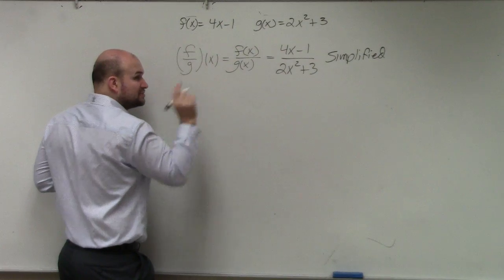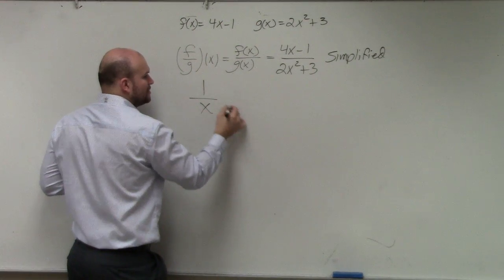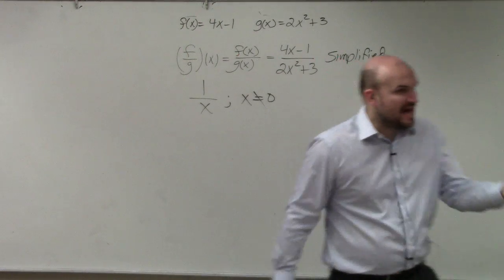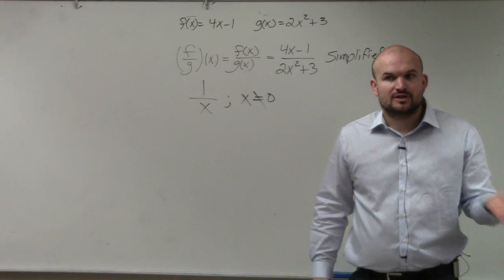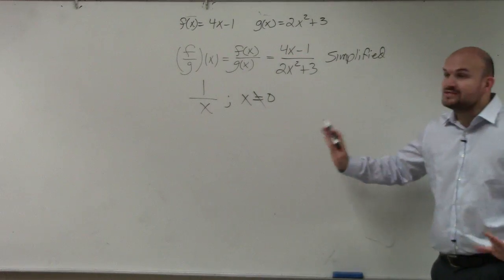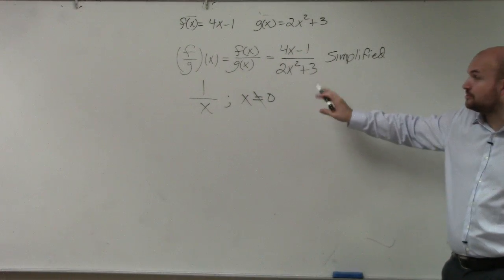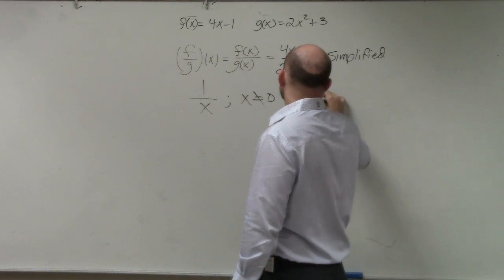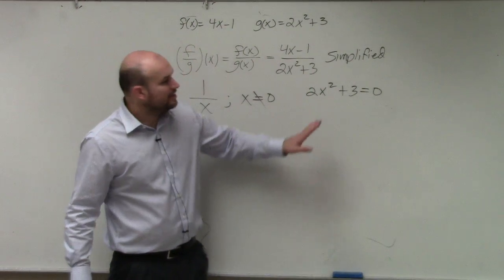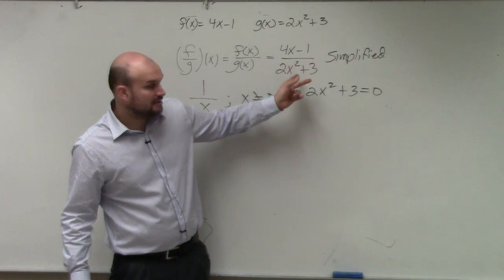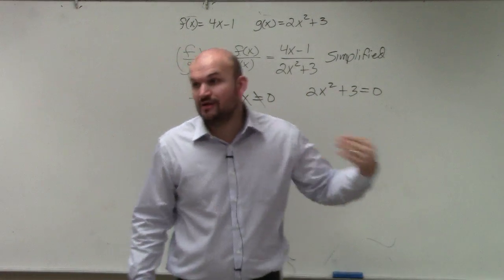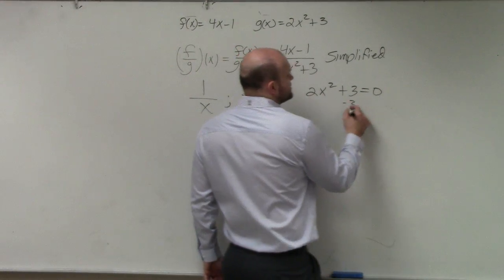However, there is a restriction on the domain. What I told you was that whenever you have a variable in the denominator, you cannot have that variable make your denominator equal to 0. So all you need to do to help find the domain is figure out the values that make your denominator equal to 0. Set your denominator equal to 0 and solve for x. Those values will make your denominator equal to 0.